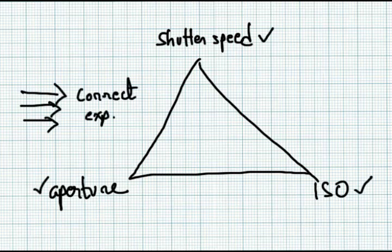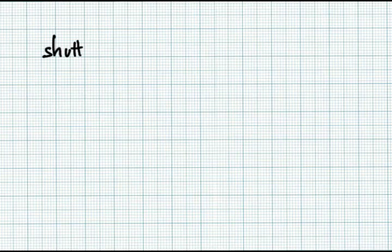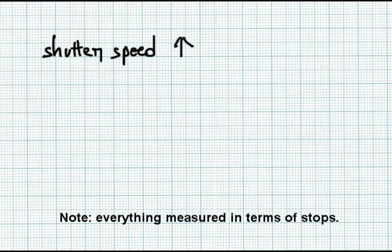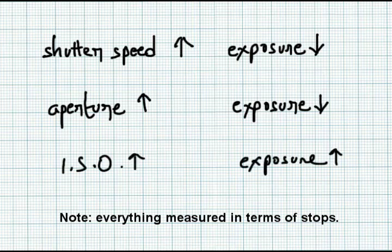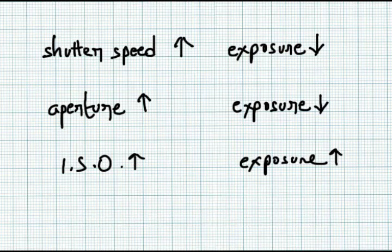In case you don't know, in terms of stops, increasing shutter speed decreases exposure, as there is less time for the sensor to capture the image. Increasing aperture also decreases exposure, as the lens opening becomes smaller. Though increasing ISO will increase the exposure, as ISO is a measure of film sensitivity and the more sensitive the film is, the more easily it can expose, with the downside that a high sensitivity sensor will also pick lot of noise.